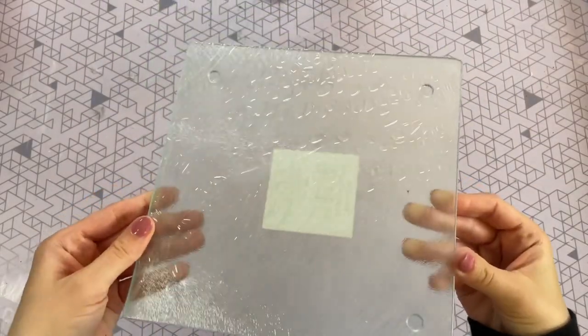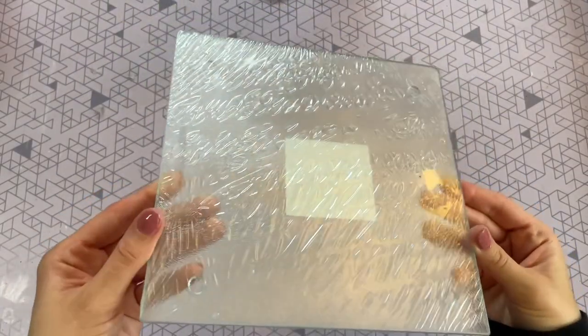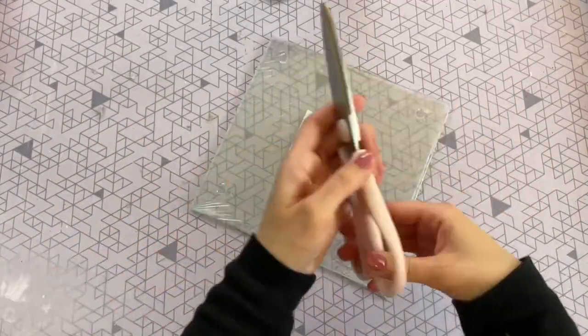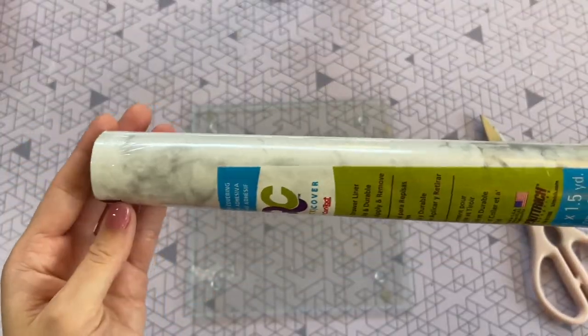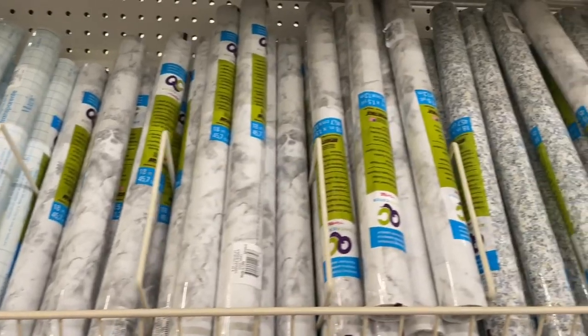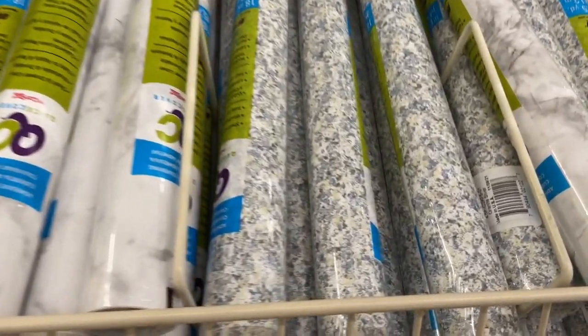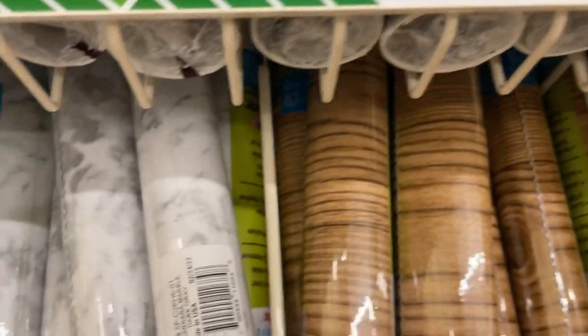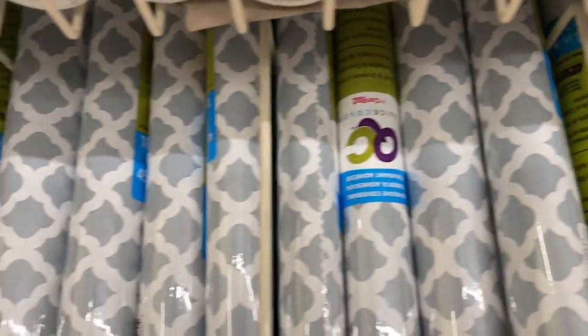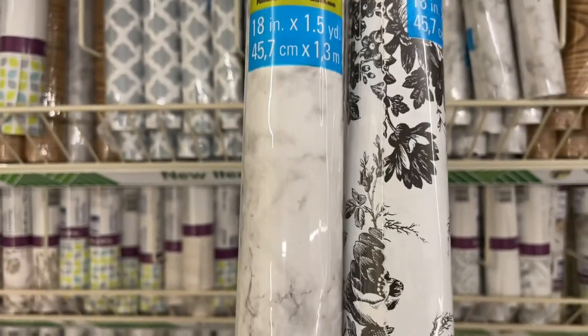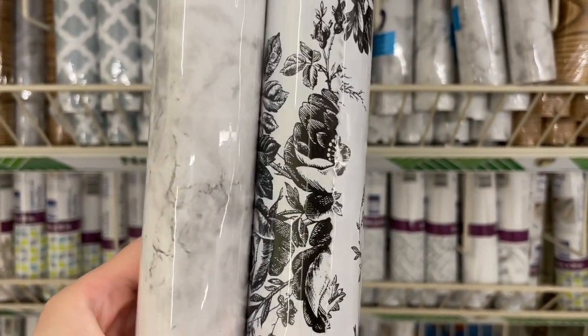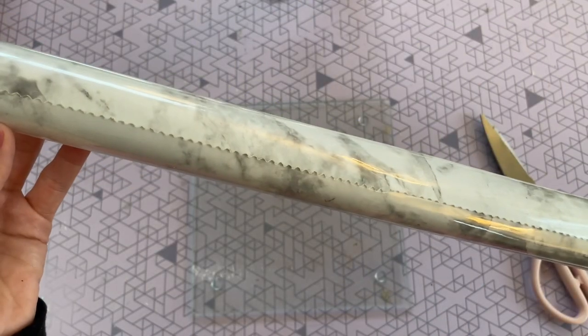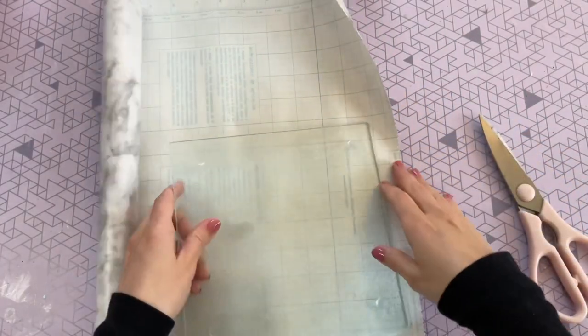For our last DIY, we're going to be transforming this glass cutting board from the Dollar Tree. So I found this one in the kitchen department at Dollar Tree. And I had never seen this one before. This was a new find for me. And I also picked up some of the contact paper from Dollar Tree. So this one was pretty close to the kitchen department. They had a bunch to choose from. They even had some faux wood. They had the faux marble look, some really nice prints. I was kind of torn between these two for this DIY, but I did decide to go with the faux marble since we were kind of going for a bit of a high-end look in this video.